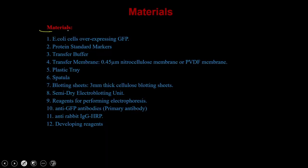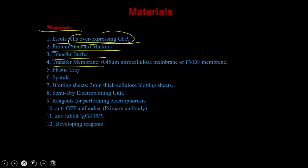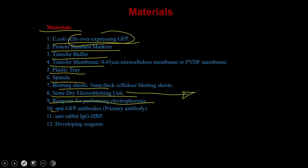The materials required for western blotting include cells — in this case E. coli overexpressing GFP — protein standards, transfer buffers, transfer membrane (nitrocellulose), plastic tray, spatula, blotting sheets, a semi-dry electro-blotting unit for transferring proteins from gel to membrane, reagents for electrophoresis, primary antibody to detect GFP, secondary antibody coupled with HRP, and developing reagents.